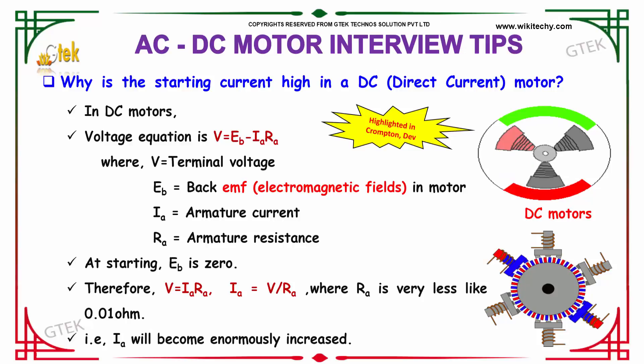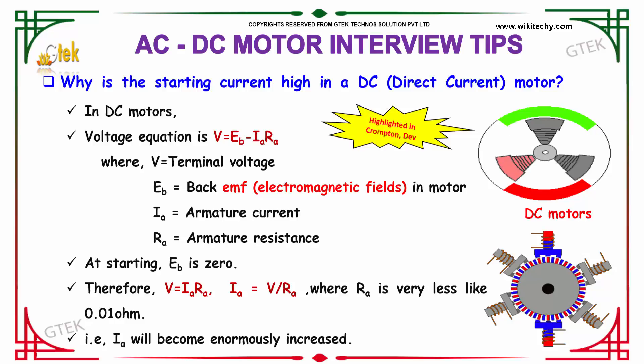Why is the starting current high in a DC motor? The reason is that in terms of DC motors, the voltage equation is V equals EB minus IA into RA.